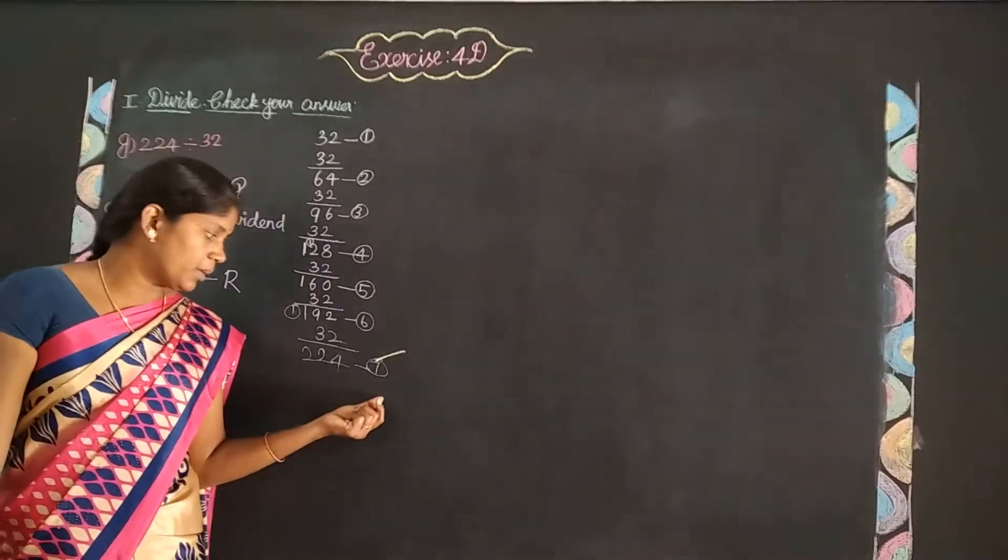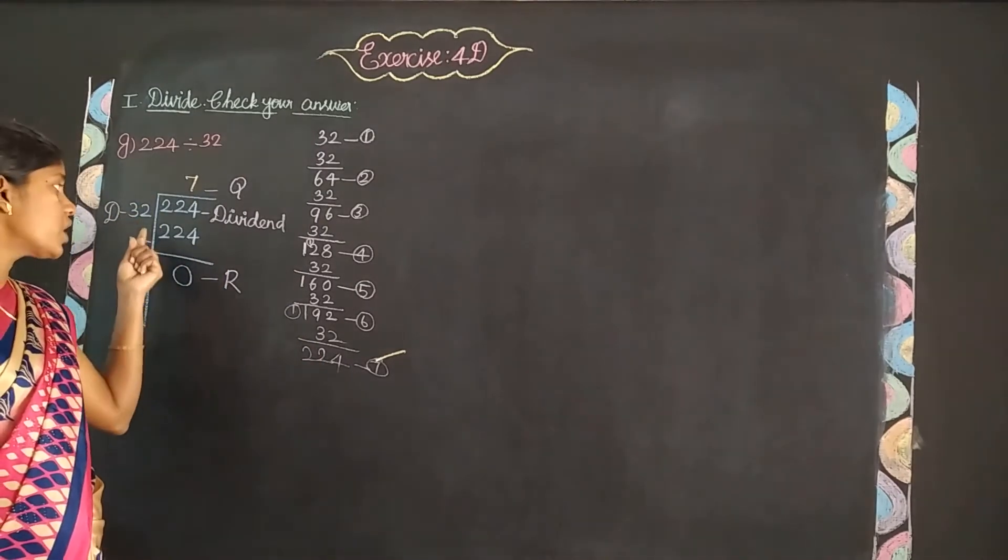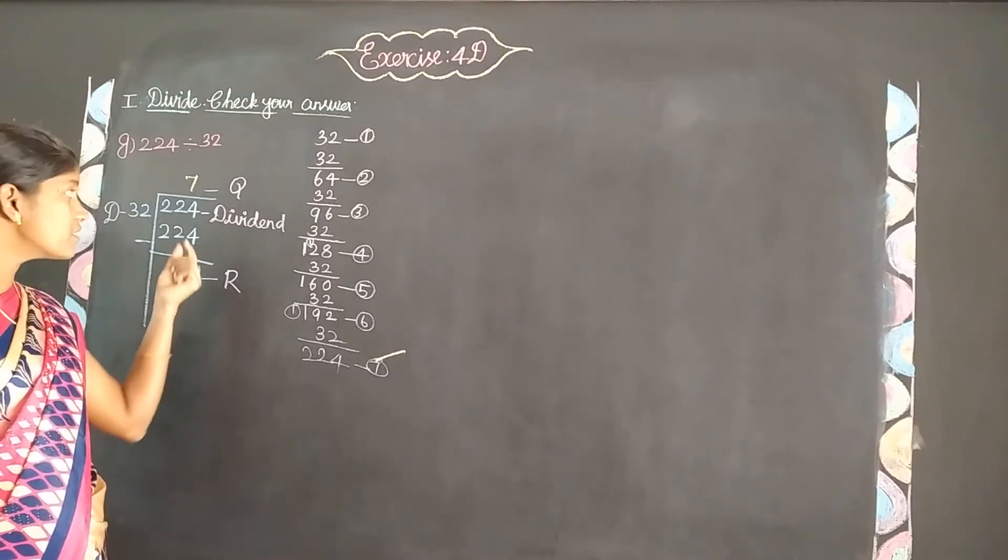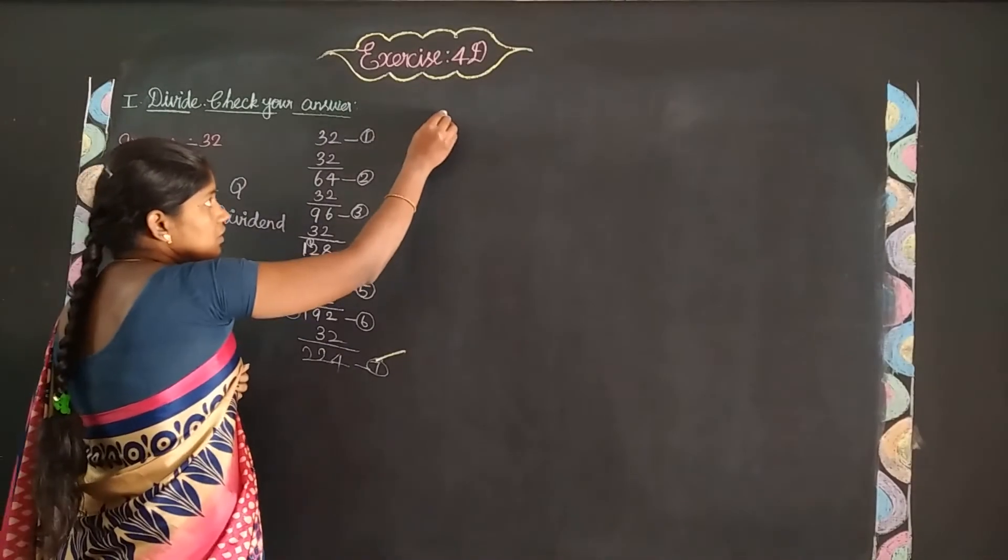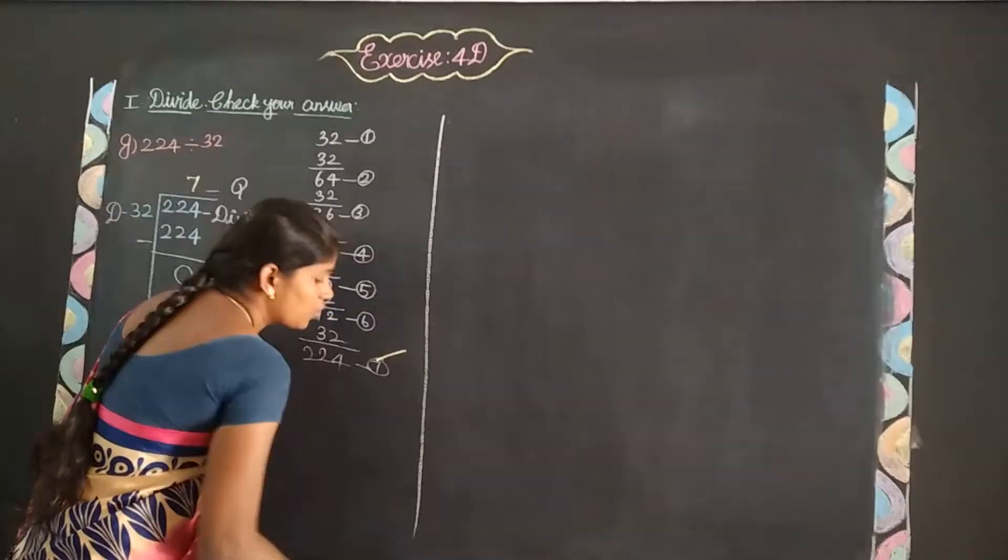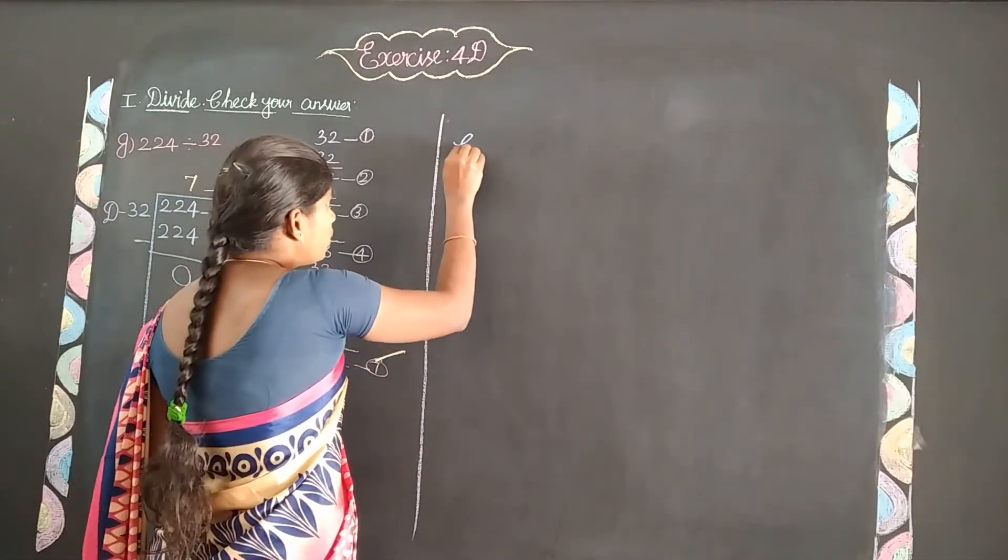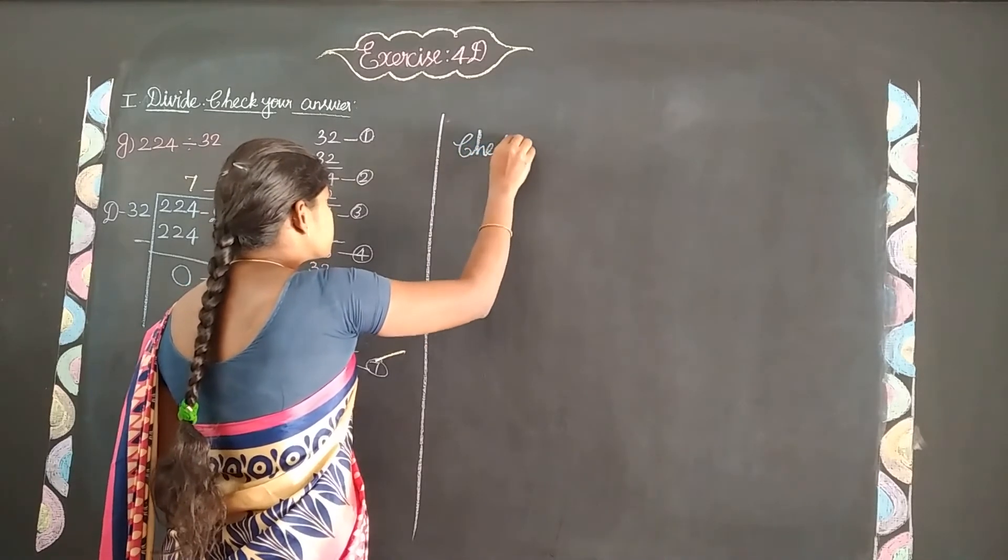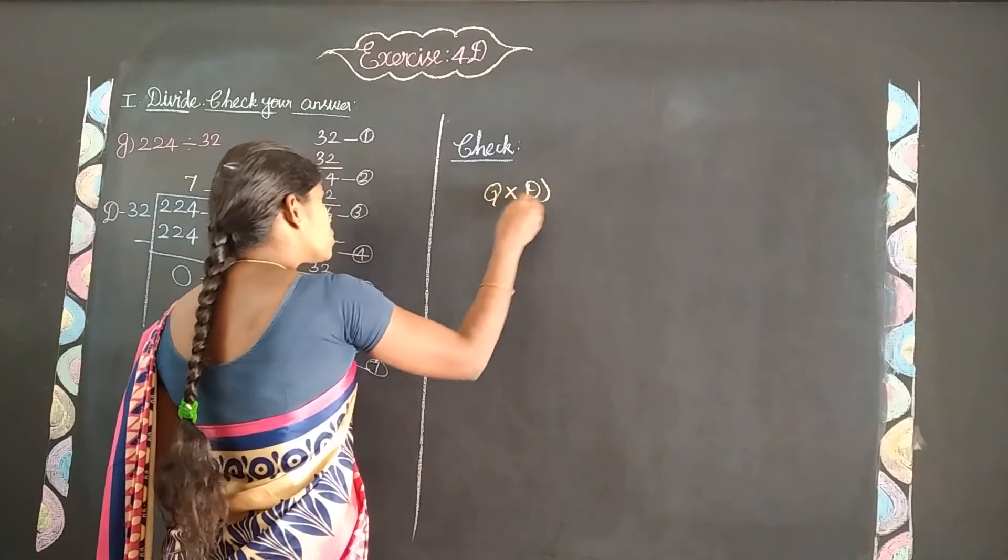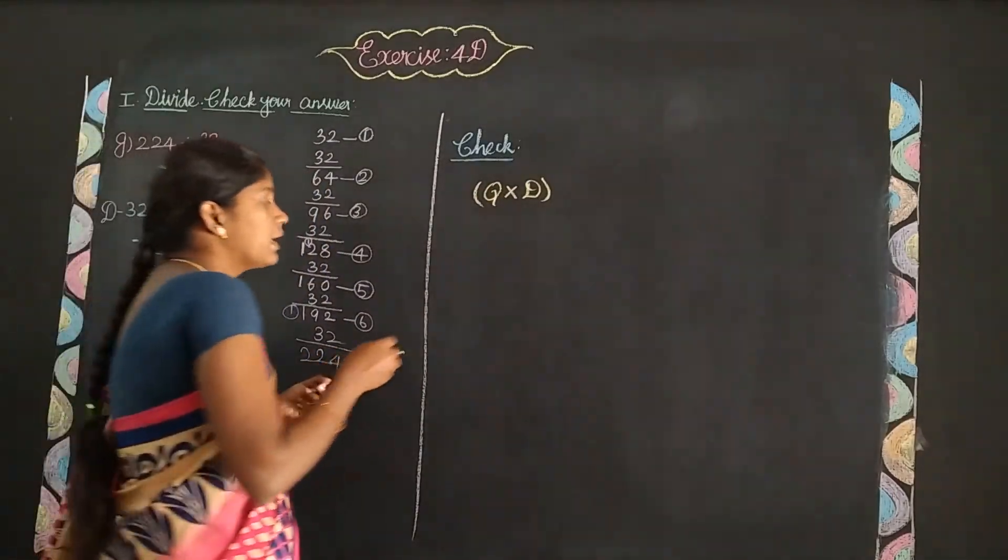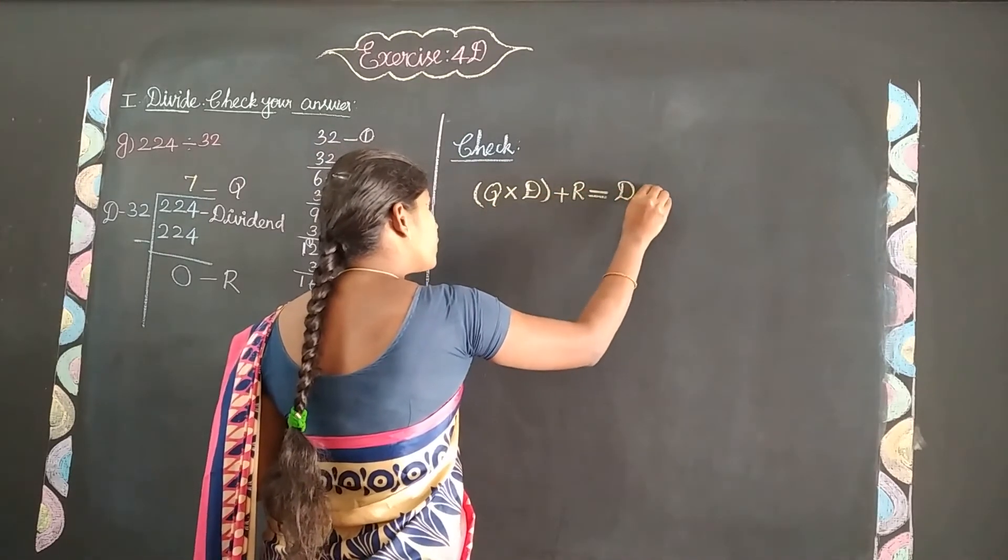Now let's check using the formula. The checking formula for division is: quotient times divisor plus remainder equals dividend. First multiply quotient times divisor, then add the remainder.